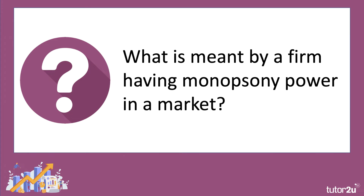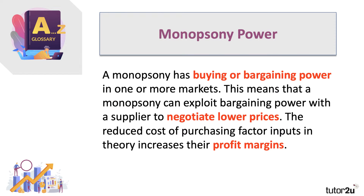So what is meant by a firm having monopsony power in a market? This is a concept that has become increasingly important in recent years. A monopsony is defined as a business that has buying or bargaining power in one or more markets, so it's an example of market power. A monopsonist can exploit their bargaining power with a supplier, for example, to bring down the negotiated price at which they can get their inputs, and the reduced cost of buying those factors of production in theory allows them to make a higher profit margin.